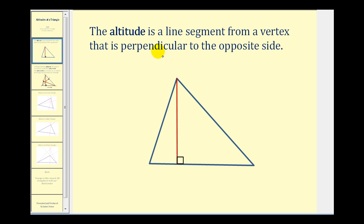The altitude is a line segment from a vertex that is perpendicular to the opposite side. So this red segment is an altitude because it connects a vertex to the opposite side and is perpendicular to that side.